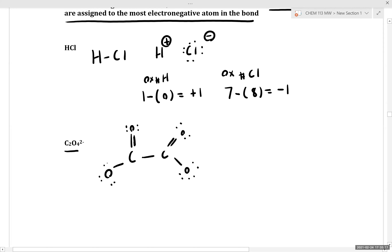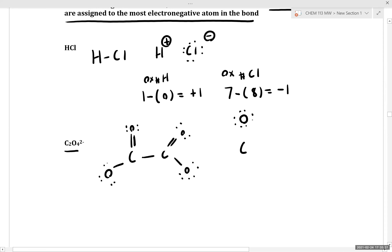The way I like to think of oxidation numbers is I take my Lewis structure and assign my electron density in my bonds to each atom. For this carbon-oxygen bond, the more electronegative atom is oxygen. So we can think of oxygen as having all four of these bonding electrons. For a carbon-carbon bond, if we have atoms of equal electronegativity, we do an even split of our electron density, so each carbon atom gets one electron.